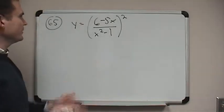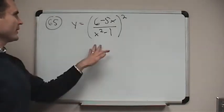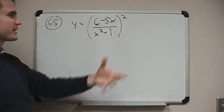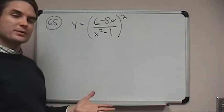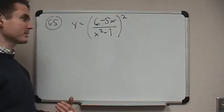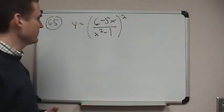Okay, one more problem from the section on chain rule and generalized power rule. We've got a function y equals 6 minus 5x over x squared minus 1, the whole quantity squared. Actually, this one is just a generalized power rule, really, but it gets a little bit more complicated because within that, we're going to have to use the quotient rule.